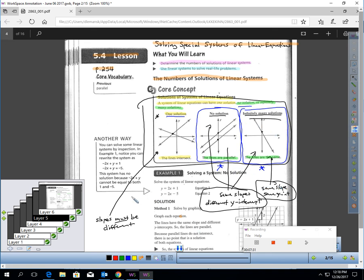By looking at the slopes, you ought to be able to determine if there's one solution or if you have one of these cases. And then the y-intercept would tell you is it no solution or infinitely many solutions. That's important to know because it can speed up your work.